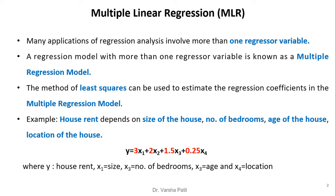Many applications of regression analysis involve more than one regressor variable. A regression model with more than one regressor variable is known as a multiple regression model. The method of least squares can be used to estimate the regression coefficients in the multiple regression model. For example, house rent depends on size of the house, number of bedrooms, age of the house, and location of the house.